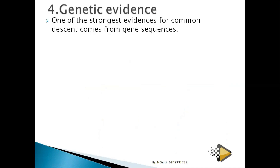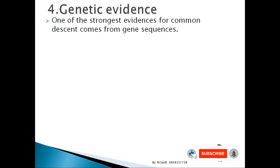The fourth evidence is genetic evidence. One of the strongest evidences for common descent comes from gene sequences. If organisms have nearly identical gene sequences, it means they share a common ancestor or diverged recently. A very low percentage of similarity indicates divergence long ago.